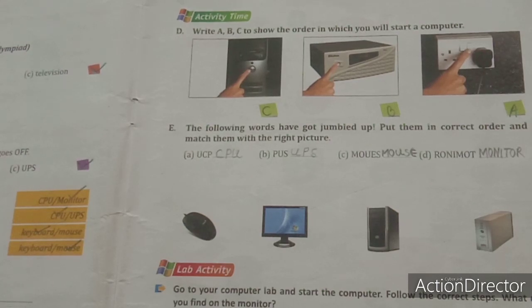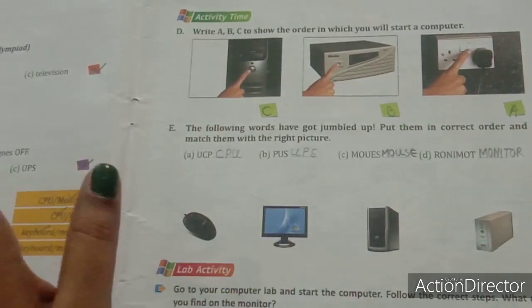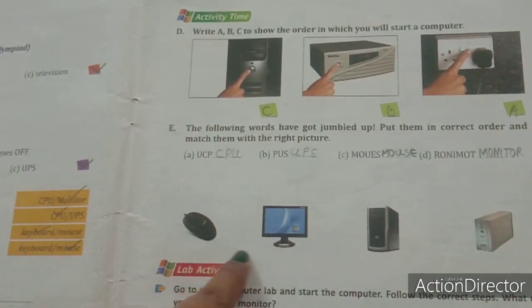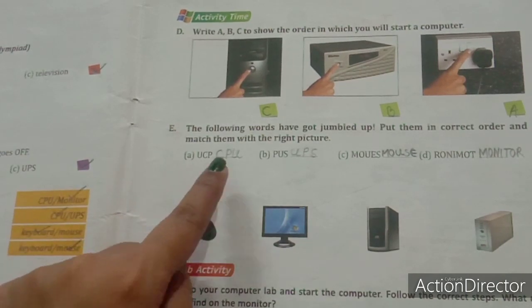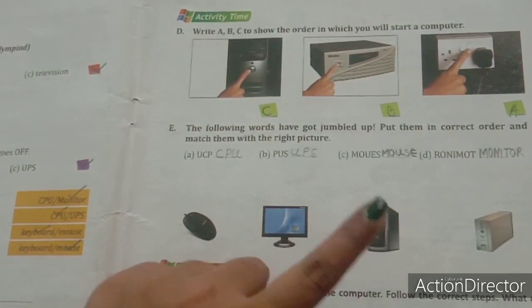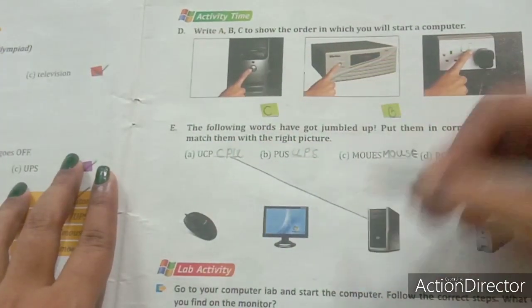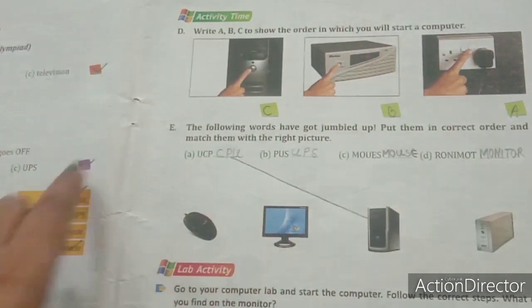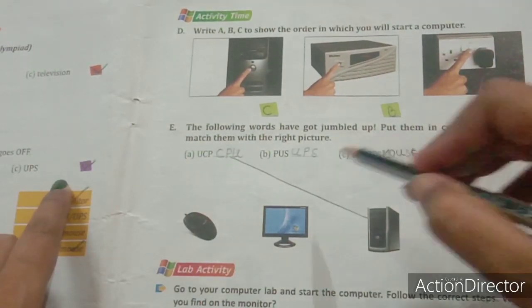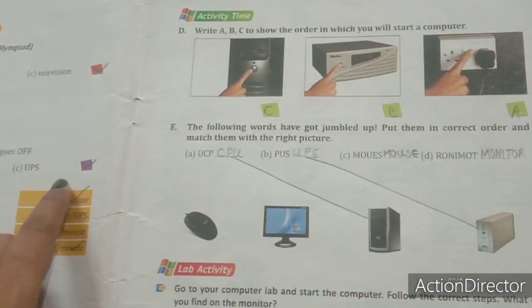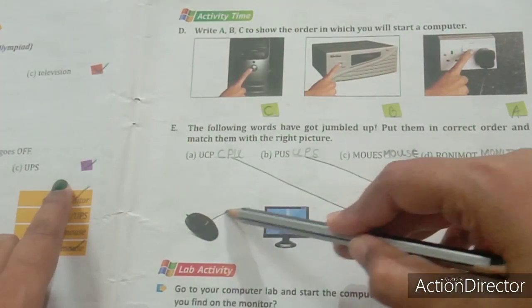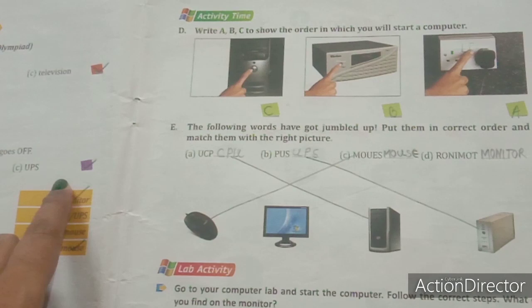Very good. Now we have written the correct letters. What do we have to do next? We have to match the names with the pictures. The first one is CPU — where is the CPU? Here it is. Match this with CPU by drawing a straight line. Next is UPS — where is the UPS? Here it is — draw a straight line. Next is mouse — where is the mouse? Here it is — draw a straight line. Last is monitor — draw a straight line and connect it with the monitor.